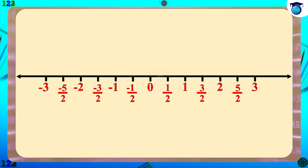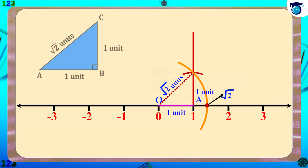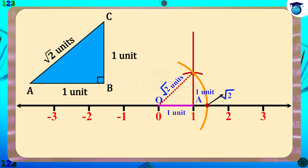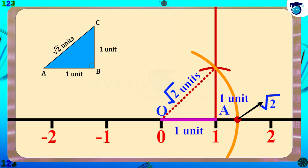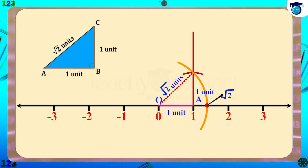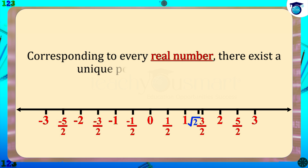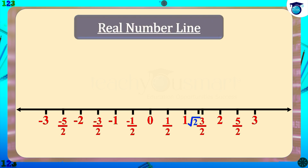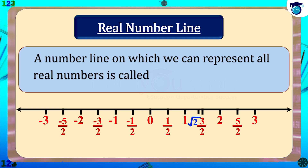Already we know that corresponding to every rational number there is a point on the number line. Similarly, corresponding to every irrational number also there is a point on the number line. For example, we have already seen that the hypotenuse of a right triangle with base and altitude of 1 unit is √2 units. We can mark the distance of the hypotenuse — that is √2 — on the number line. In general, corresponding to every real number there exists a unique point on a number line. A number line on which we can represent all real numbers is called a real number line. Conversely, corresponding to every point on the number line there exists a unique real number.